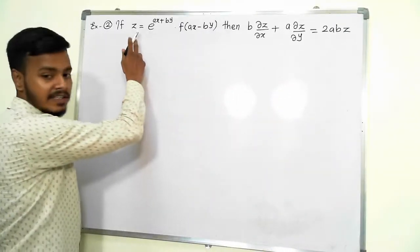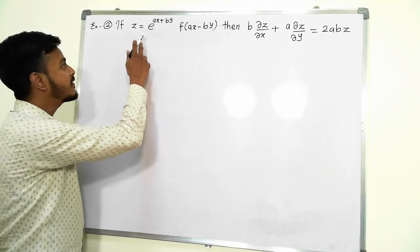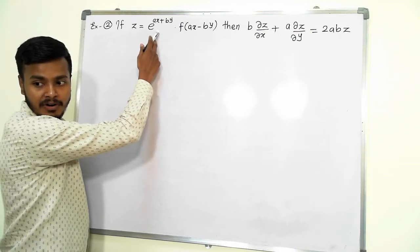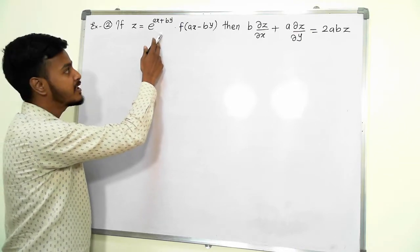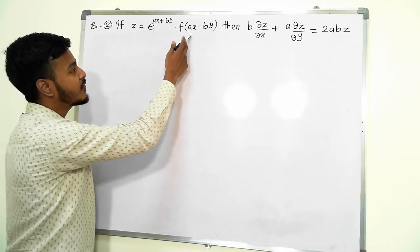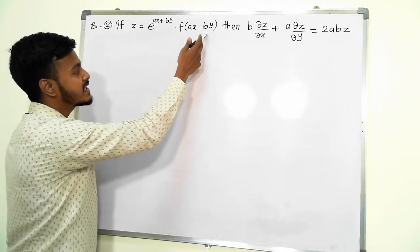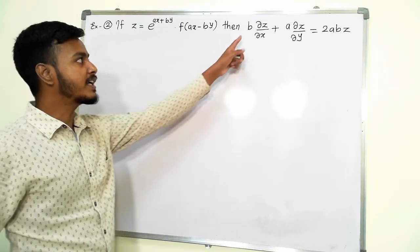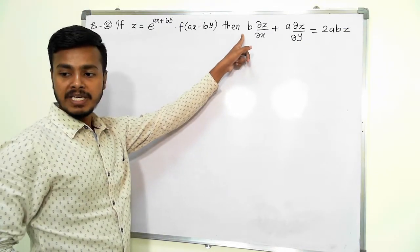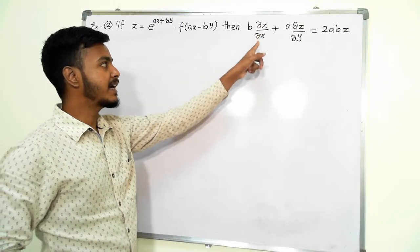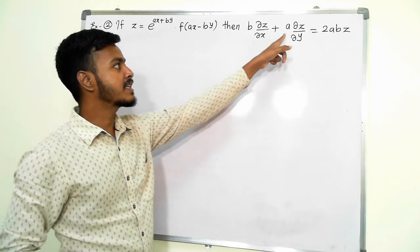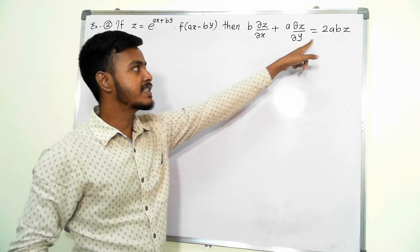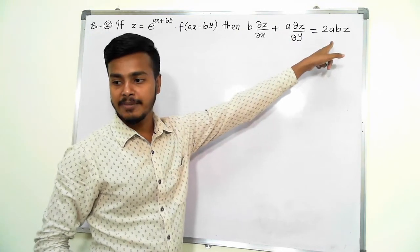This problem says: we have z is equal to e to the power (ax + by) into f of (ax minus by). Then prove that b times ∂z/∂x plus a times ∂z/∂y is equal to 2abz.